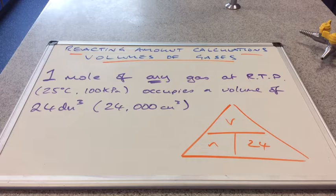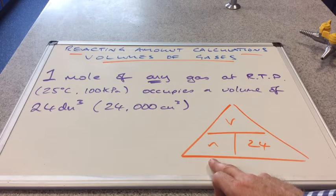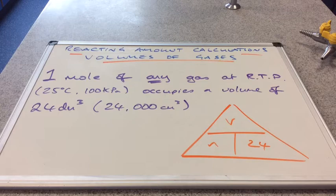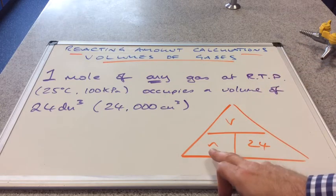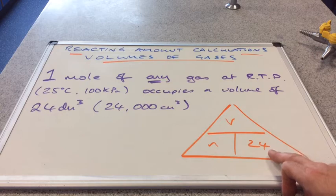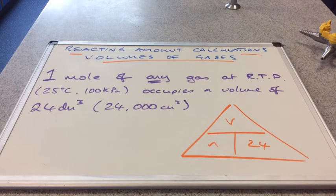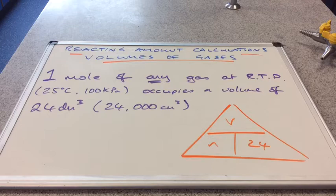So if you know how many moles of gas you've got, to find out the volume that would occupy in decimeters cubed, V equals number of moles times 24. Obviously if you want to find out the volume in cubic centimeters, you would multiply by 24,000.